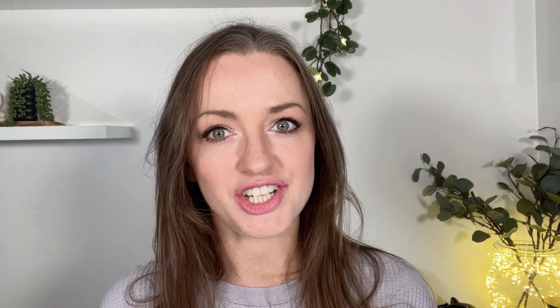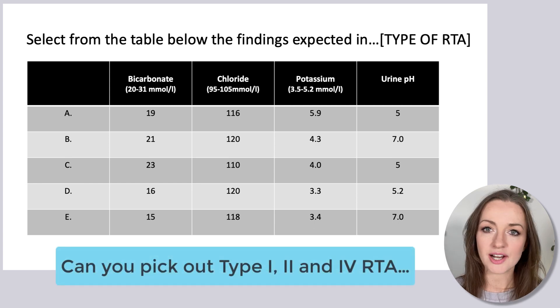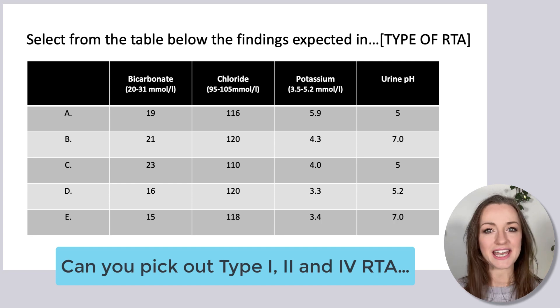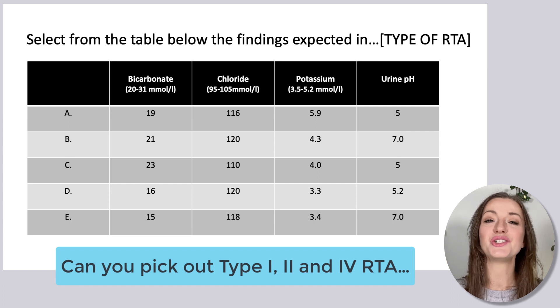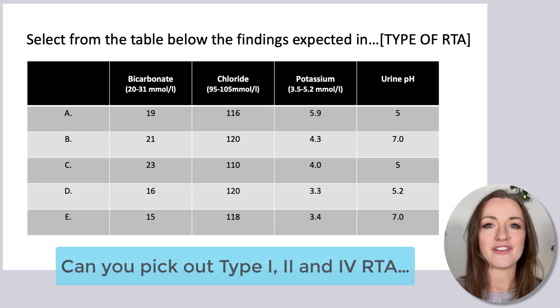What I want to do today is give you biochemical patterns so that you can answer questions like this in your MCQs without blinking an eye. Here is a table with lots of biochemical options — all of the different types of RTA are represented. If you're feeling game, pause this video and try to find type 1, type 2, and type 4 RTA. Try to do that first, then continue the video — I think you'll get the most out of it that way.